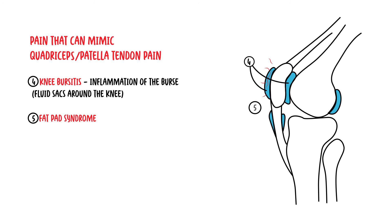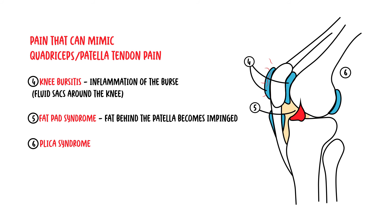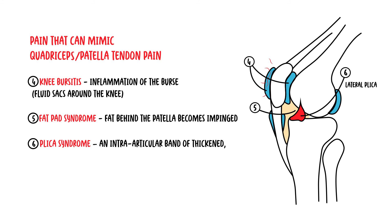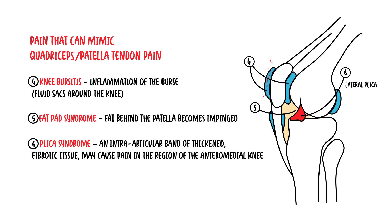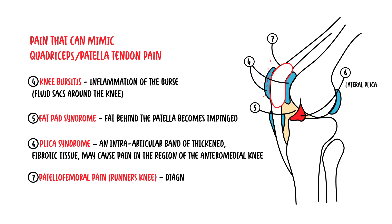Fat pad syndrome, where fat behind the patella becomes impinged causing pain. Plica syndrome, which is essentially where you have an intra-articular band that is thickened and fibrosed, and this may cause pain around the knee region. Patellofemoral pain syndrome, also known as runner's knee, which is essentially a diagnosis of exclusion common in athletes. There will be a video that will look into some of these conditions in more detail, as well as their treatment.